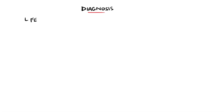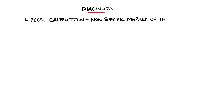In terms of diagnosis, fecal calprotectin is a marker of inflammation within the GI tract and is one of the first investigations done. However, it is not specific for inflammatory bowel disease and diagnosis is mostly confirmed by colonoscopy and biopsy.